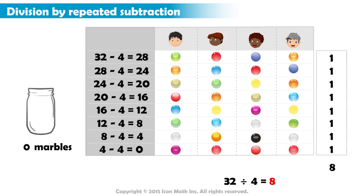Every player gets eight marbles when we divide 32 marbles among four people. So, eight is the quotient.